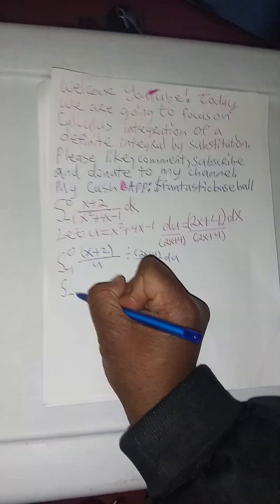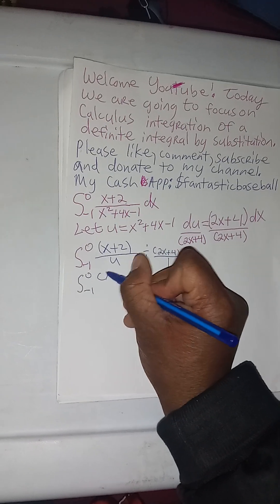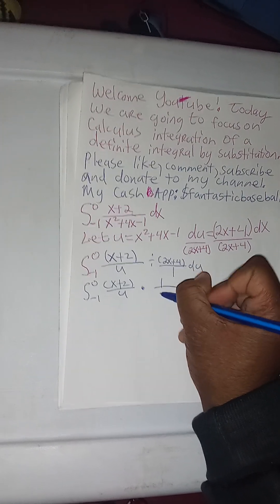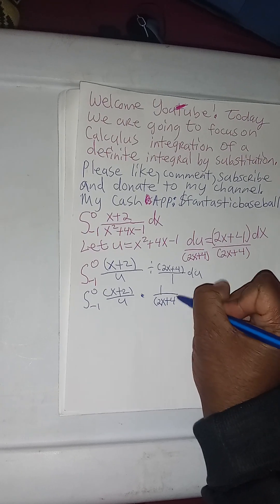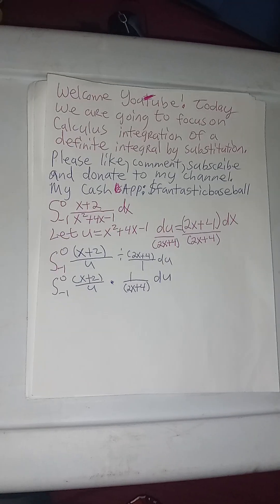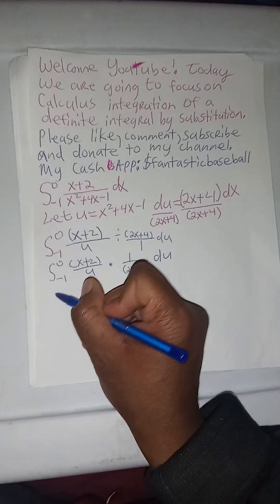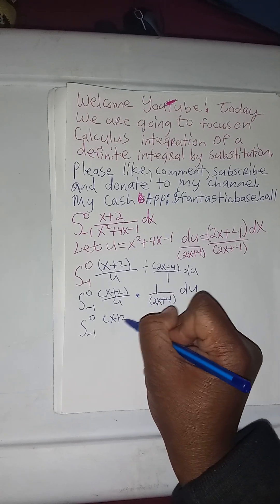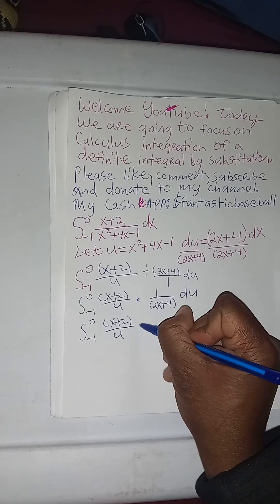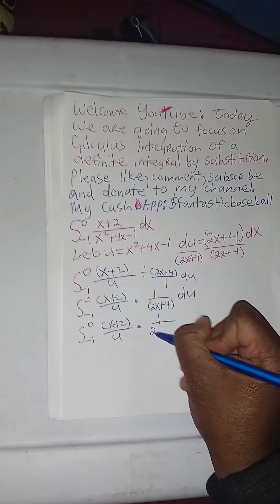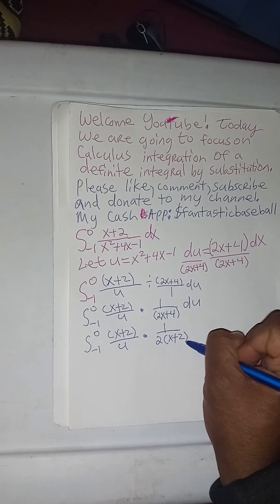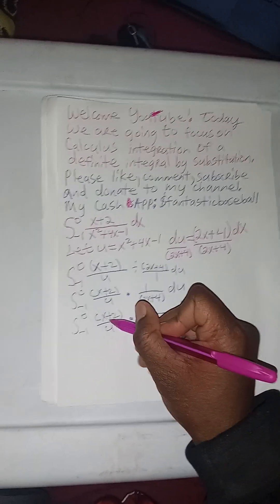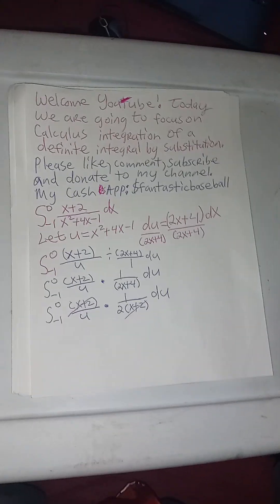So from negative 1 to 0 of x plus 2 divided by u, times 1 over 2x plus 4, du. We can factor a 2 out of 2x plus 4, giving us x plus 2 divided by u times 1 over 2, times x plus 2, du. Now we can cancel the x plus 2 terms.